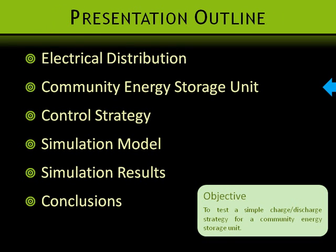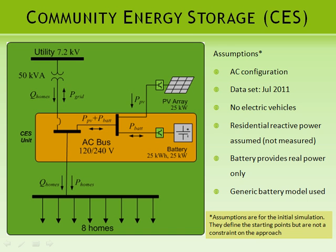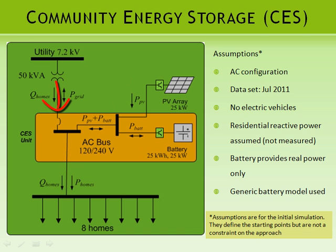Let's take a look at what the storage unit will look like. The schematic of the storage unit is shown here. From the top, we show the distribution transformer stepping down the utility voltage. The transformer is connected on its secondary side to the energy storage unit, shown inside the orange box.